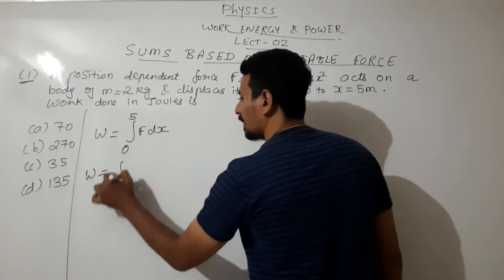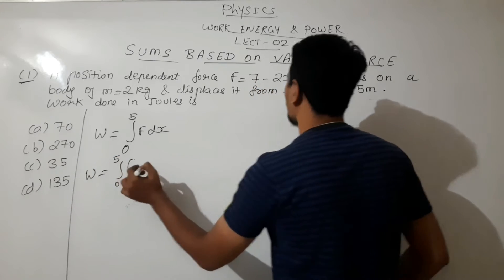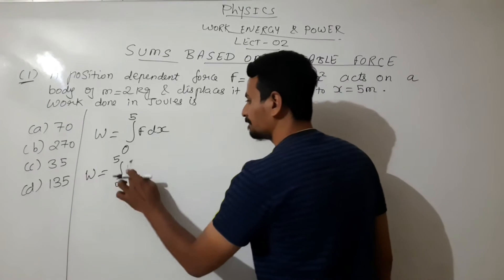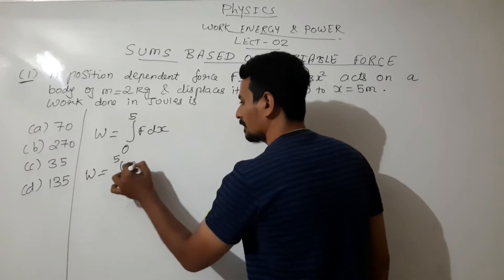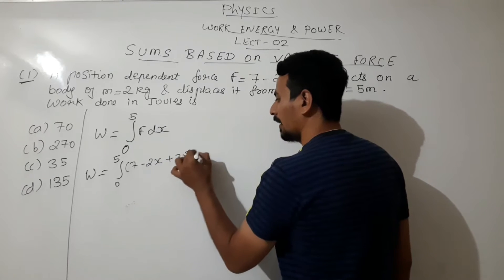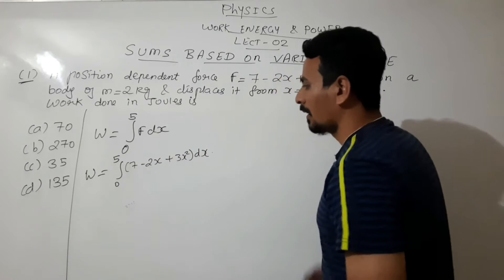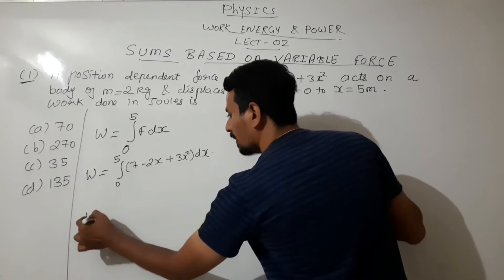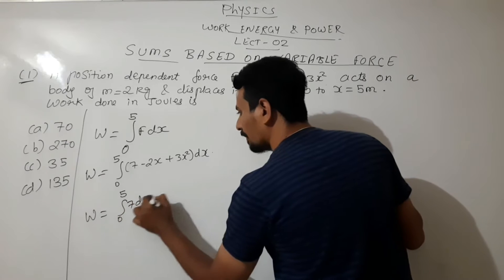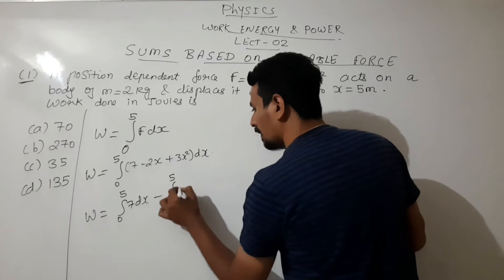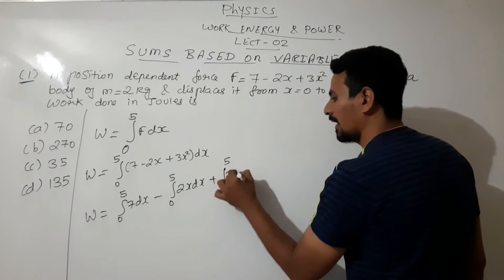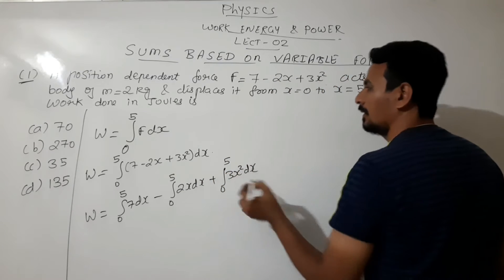Work done will be integration 0 to 5. Instead of F we will write as 7 - 2x + 3x² into dx. So now work done will be 0 to 5 of 7dx minus 0 to 5 of 2x dx plus 0 to 5 of 3x² dx.